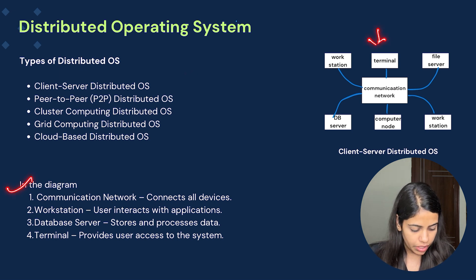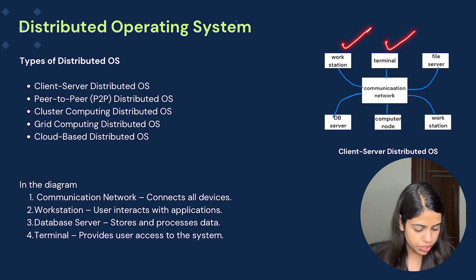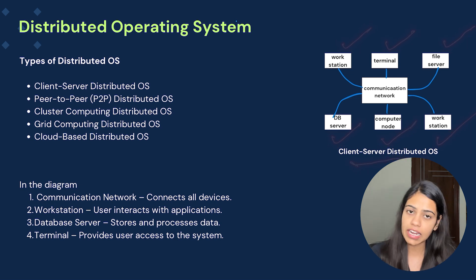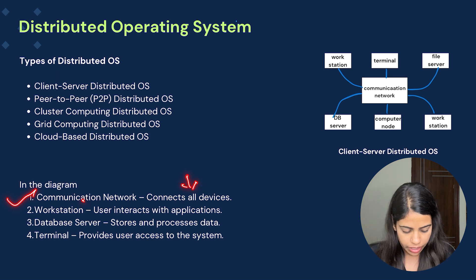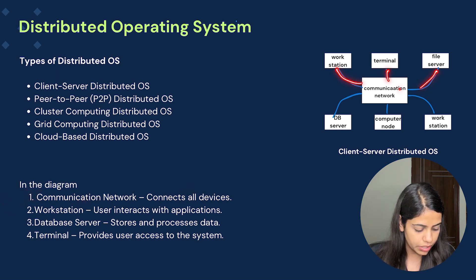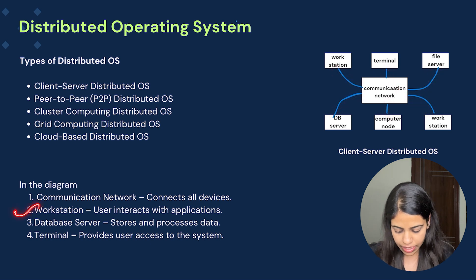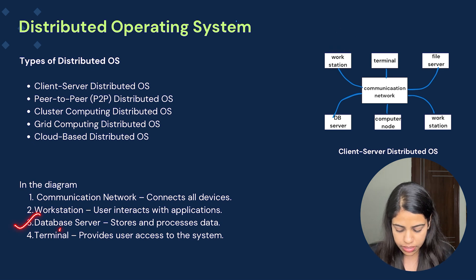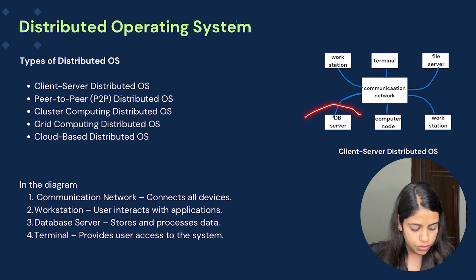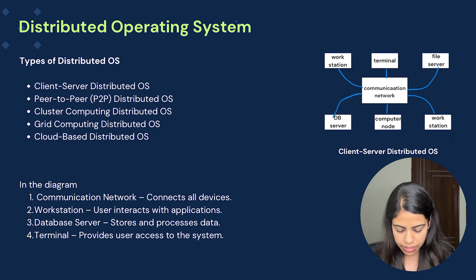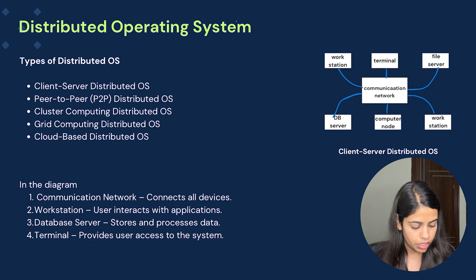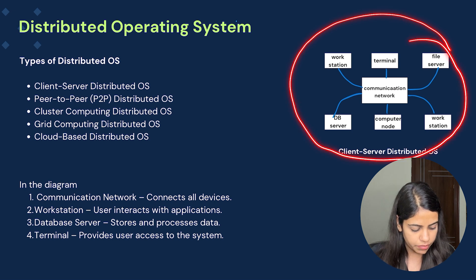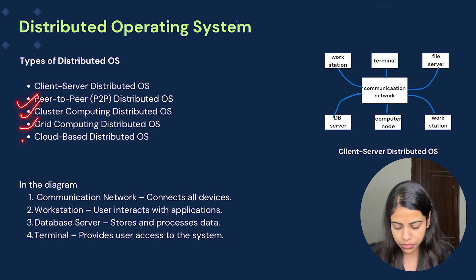Here is a diagram showing a communication network connecting a workstation, terminal, file server, DB server, computer node, and workstation — this is an example of a client-server distributed OS. The communication network connects all the devices. The workstation is where the user interacts with the application. The database server stores and processes data. The terminal provides the user access to the system. In the same way, there are multiple kinds of distributed OS.